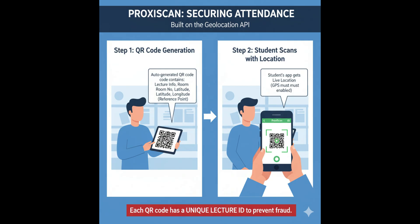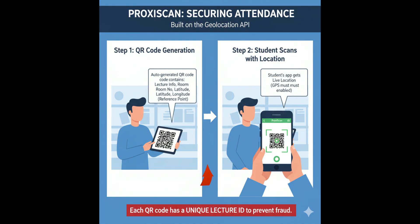ProxyScan is built on a simple idea — the geolocation API. When a lecturer or faculty member starts a lecture, the application automatically generates a QR code. This QR code contains important details such as the lecture information, room number, and the latitude and longitude of that room, which serve as a reference point for verifying student locations.